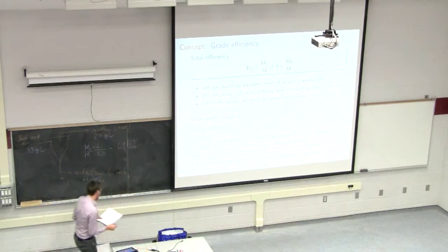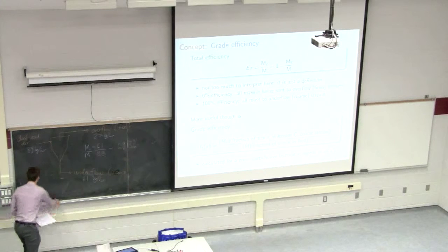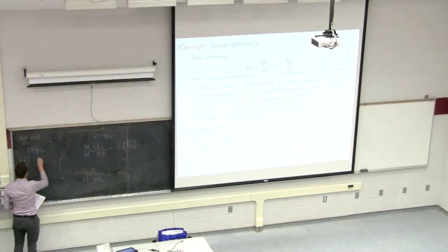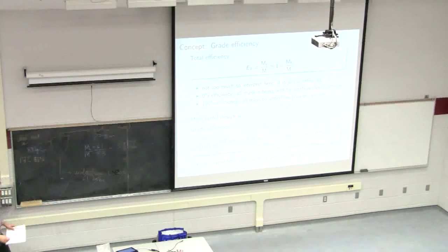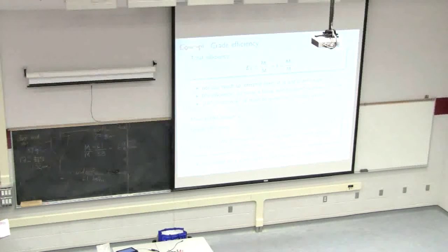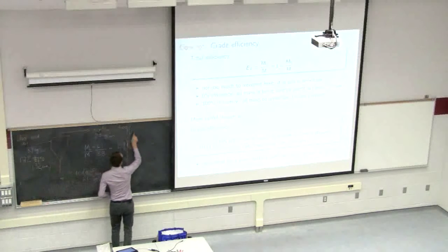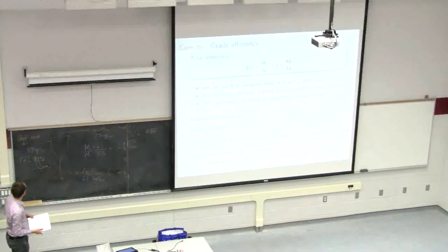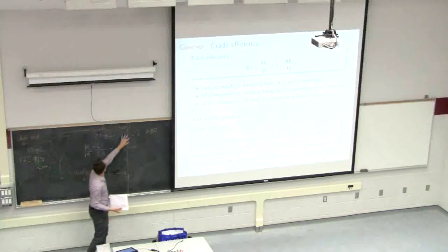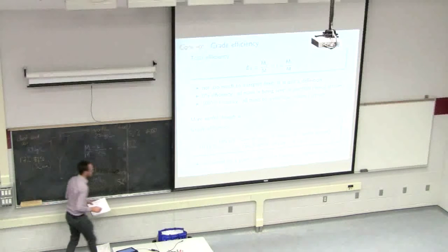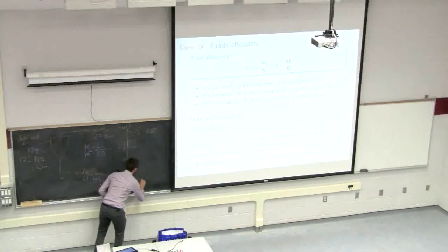In the prior class I had given some numbers. We looked at 88 kilograms per hour feed, of which 17% was from a number 450 Tyler mesh — 450 Tyler mesh is 32 microns — so 17% in the feed was from that size fraction. In the fine stream, 52% was from number 450 Tyler mesh. By a mass balance — 17% of 88 kg, 52% of 27 kg — you can calculate that what's leaving in the underflow is 1.5%.